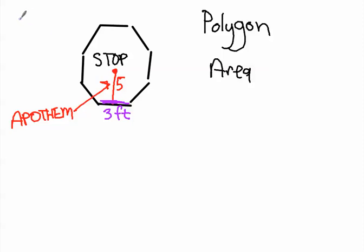This thing has eight sides. This thing has eight total sides all the way around because it's a stop sign.